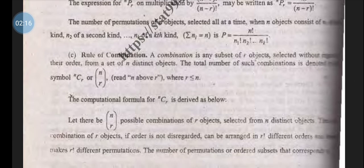For permutation of n objects selecting all at a time, when the objects consist of n1 of one kind, n2 of second kind, and nk of kth kind, then P equals n! over (n1! times n2! times ... times nk!).